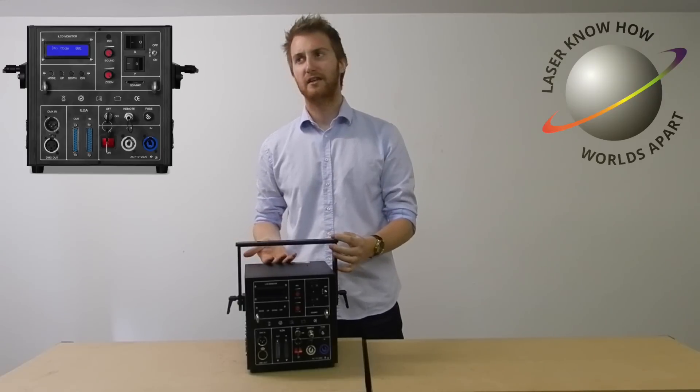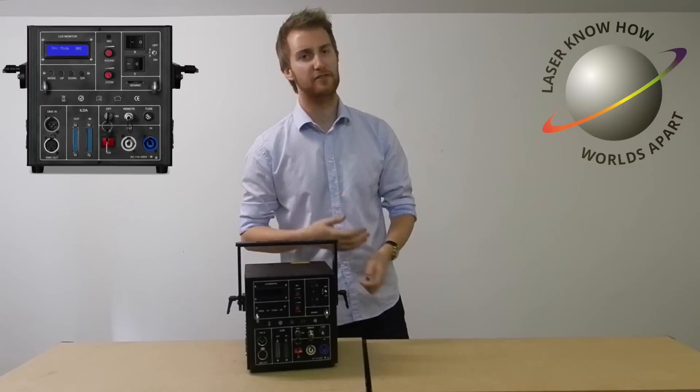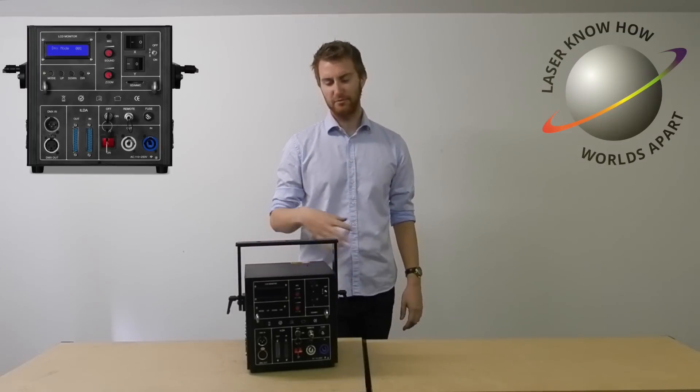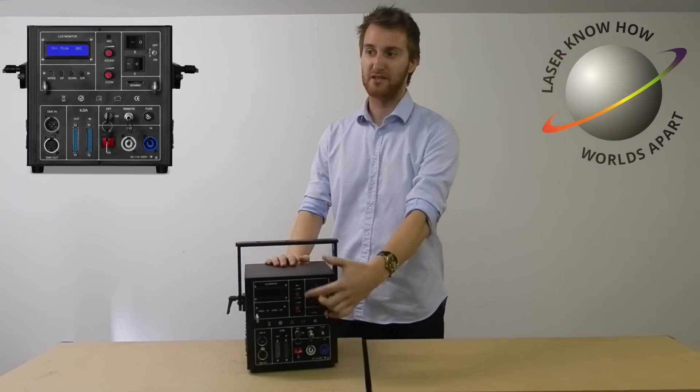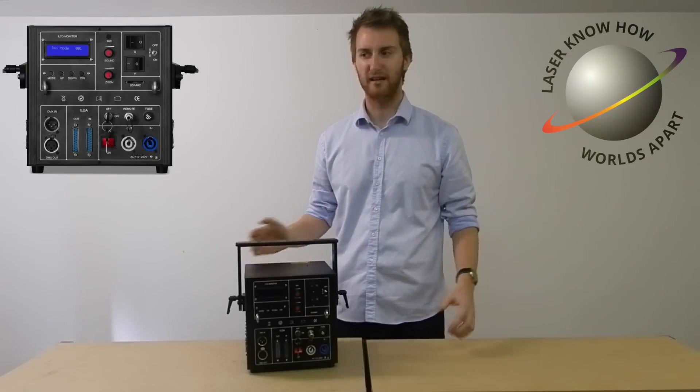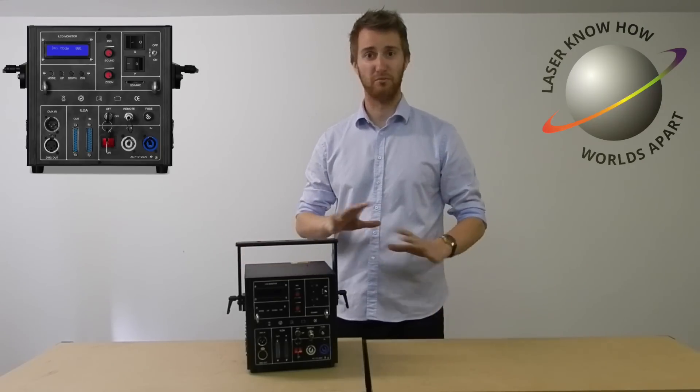You can trigger the shows or the graphics files over DMX. So let's say you've got something like a wedding, if you're a mobile DJ, you want to have the bride and groom's name projected, save that onto the SD card and trigger it over DMX with the rest of your lighting rig. No faffing about with computer control, just over DMX.